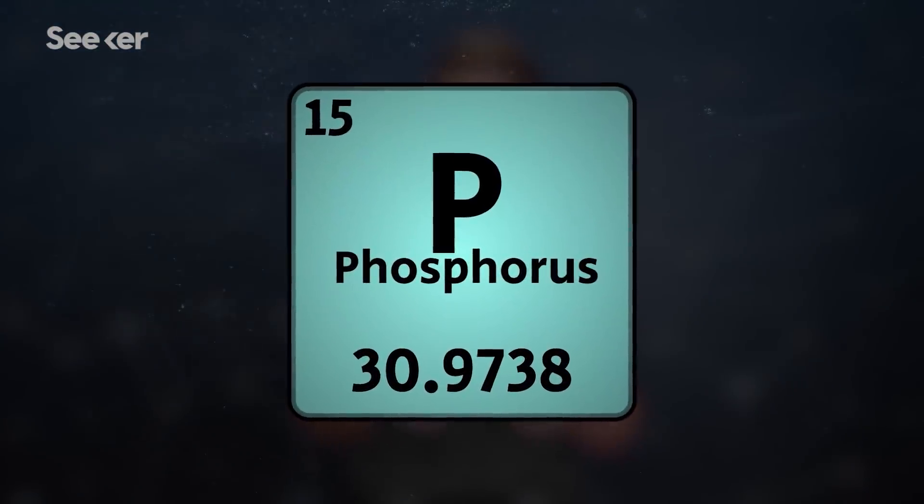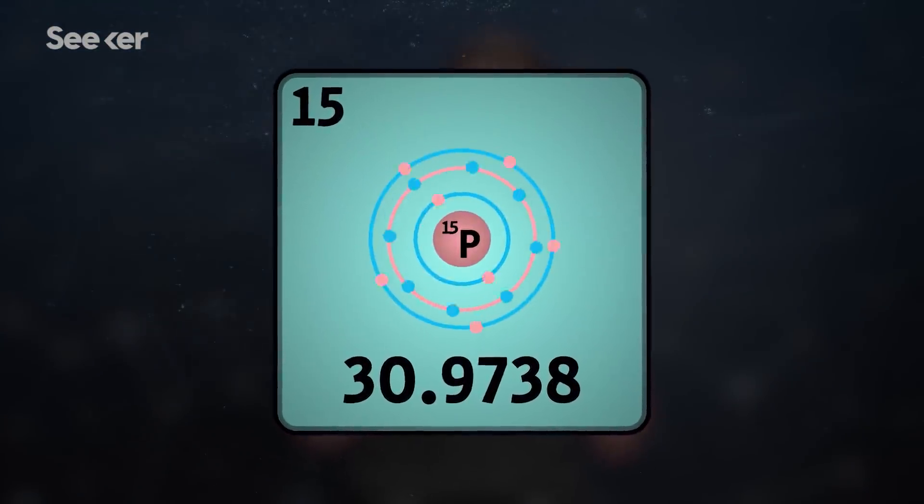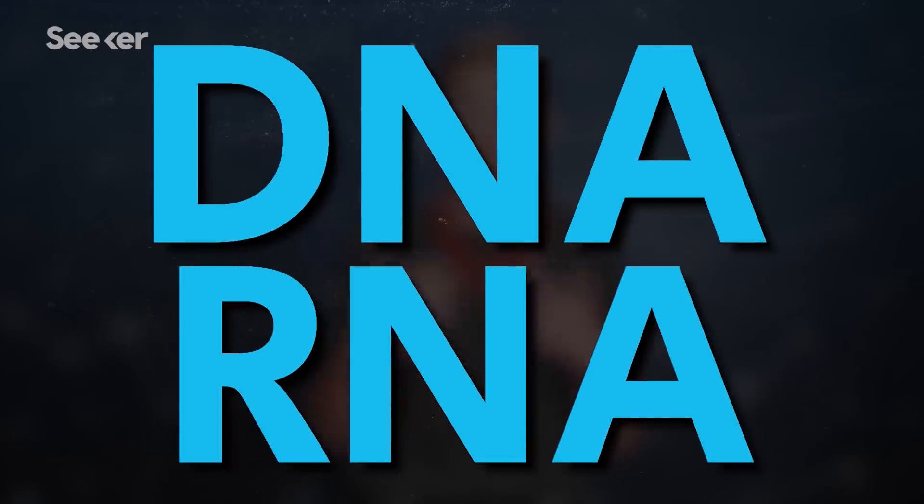But the other element, phosphorus, also has an essential task. It's the key additional piece that makes up our DNA and RNA, our genetic makeup inside which the rest of our existence is encoded, and our ATP, which is how we store and use energy.